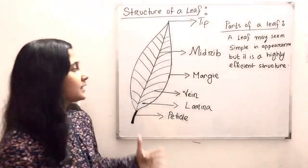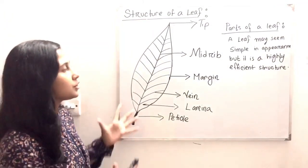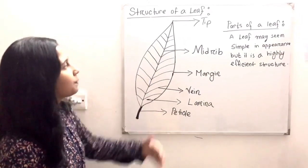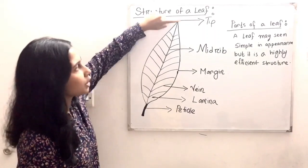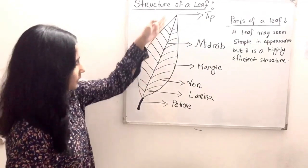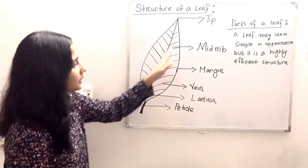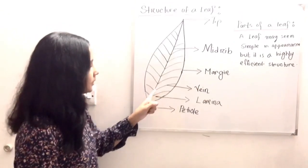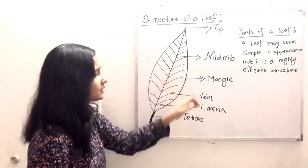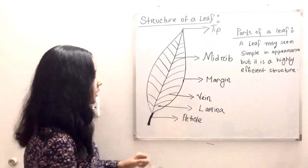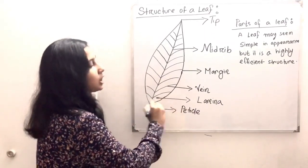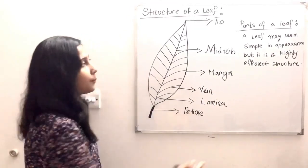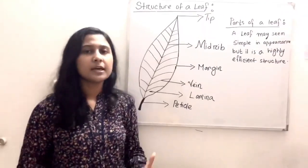As you can see, I have drawn the structure of a leaf. At the top, this part is called the tip. The middle line is called the midrib. This outer portion, this edge, is called the margin. These tiny little lines are called veins, and the inside portion is called the lamina. This last portion is called the petiole.